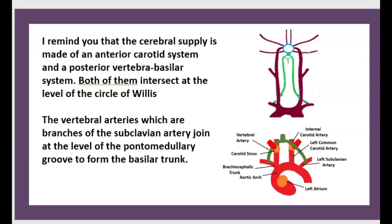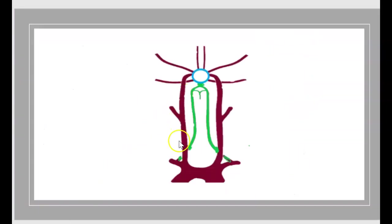The vertebral arteries, which are branches of the subclavian arteries, join at the level of the pontomedullary groove to form the basilar trunk. In red is the carotid system, anterior, and in green is the vertebral system, or posterior.